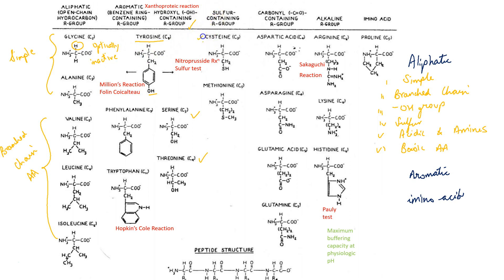Sulphur-containing amino acids are cysteine and methionine. The structure of cysteine is very similar to serine — the only difference is that instead of OH, cysteine has SH, which is called the thiol group. The entire carbon skeleton of cysteine is formed by serine, and the sulphur atom in cysteine comes from methionine. So serine and methionine are both required for the synthesis of cysteine.